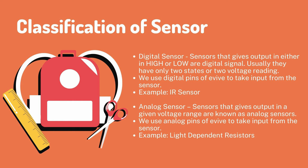Now, the classifications of sensors. We have the digital sensor, which is a sensor that gives output in either high or low — a digital signal. Usually they have only two states or two voltage endings. We use the digital pins of evive to take input from the sensor.